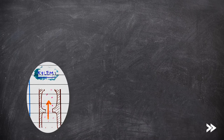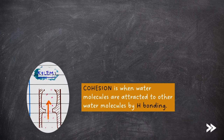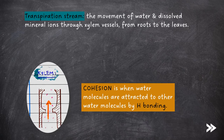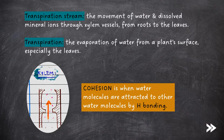Before we move on to cohesion tension theory in more detail, it's important to know a few key terms. Cohesion is when water molecules are attracted to other water molecules by hydrogen bonding. The transpiration stream is the movement of water and dissolved mineral ions through the xylem vessels from the roots to the leaves. Transpiration is the evaporation of water from a plant surface, especially the leaves.